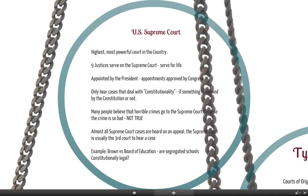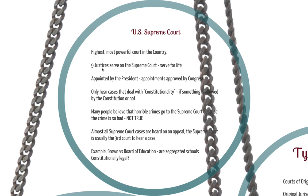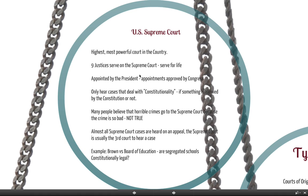We're not going to talk about the state Supreme Court because every state has a different type. Let's look at the U.S. Supreme Court — the highest, most powerful court in the entire country. The Supreme Court is made up of nine justices who serve for life. Once you become a justice, you can serve until you retire. In rare cases, if you commit a crime, you could be removed. These justices are appointed by the president, and the appointment has to be approved by Congress — so there's a check and balance where Congress can veto the president's appointment.